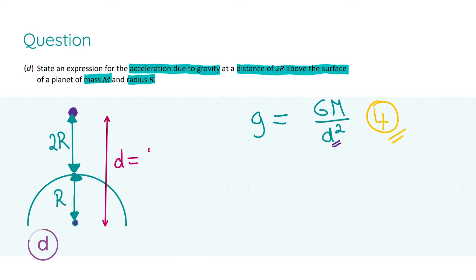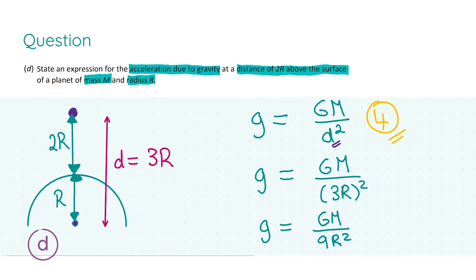From the diagram it's obvious that d equals three times the radius. Putting this into our formula and squaring the denominator to tidy up our expression gives us a final answer of g equals capital G m over nine r squared. Three marks.